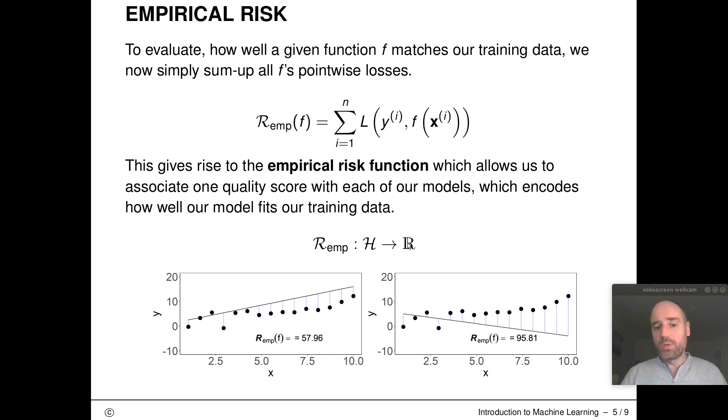If we have that we can compare two given models. For that simple situation with one feature we can just compare them by eyeballing but in general we can't do that. Usually we'll have a few hundred features and it's very hard to visualize these guys. Instead we can compute their numerical empirical risk. These numbers tell us that this guy on the left hand side has a risk of about 58 and this guy has a risk close to 100, so we would prefer this one.